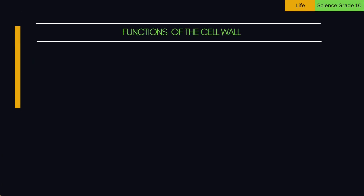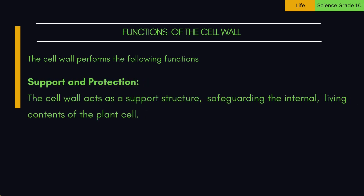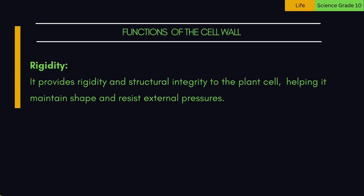Functions of the cell wall: 1. Support and protection — the cell wall acts as a support structure, safeguarding the internal living contents of the plant cell. 2. Rigidity — it provides rigidity and structural integrity to the plant cell, helping it maintain shape and resist external pressures.